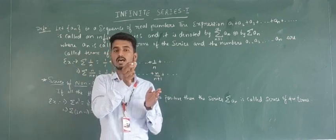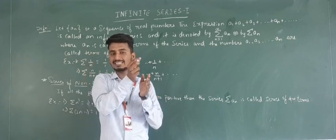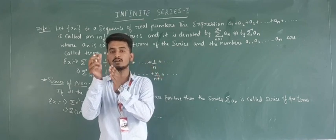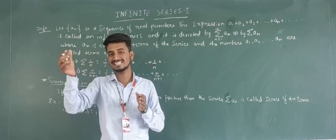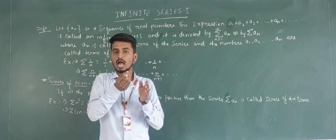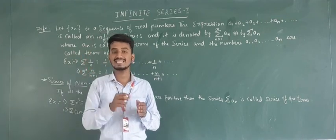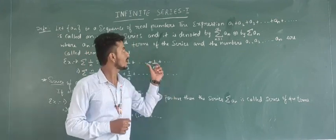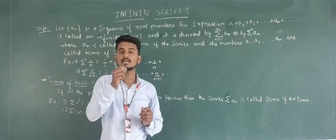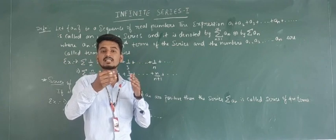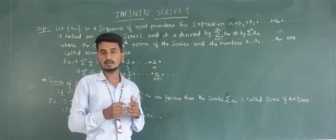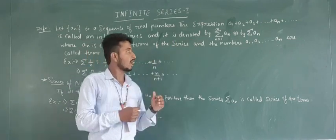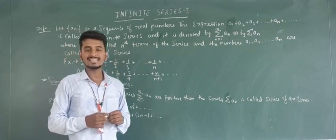These numbers are arranged in order. The difference between the first and second term is 1, the second and third term is also 1. So they have a definite order, and this type of arrangement is called a sequence. If we add the terms of this sequence, then we call it a series — the sum of the terms of a sequence is called a series. An infinite series is a series up to an infinite number of terms.